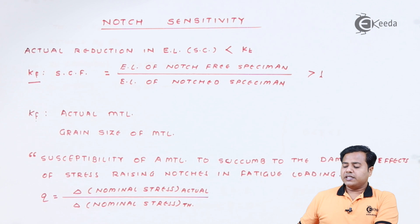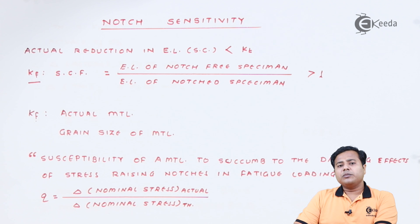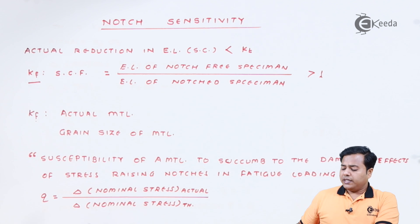Now let us look at this definition. It says that the notch sensitivity is susceptibility of a material to succumb to the damaging effects of stress-raising notches in fatigue loading. In short, it is the tendency of the body or tendency of the material which has the notch to show the variations in the endurance limit just because of the presence of the notch. So in that case, the factor q, which is the notch sensitivity factor, is given by the ratio of increase in nominal stress due to the actual things divided by the increase in nominal stress due to the theoretical things.